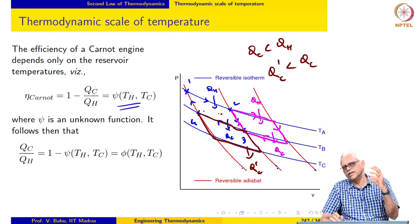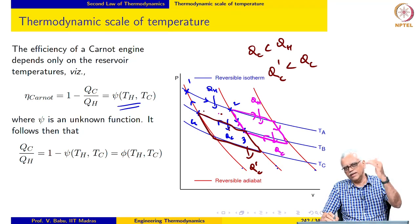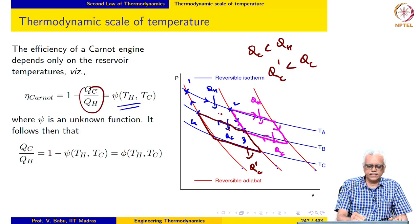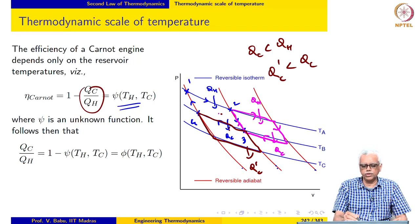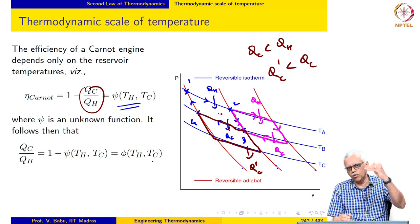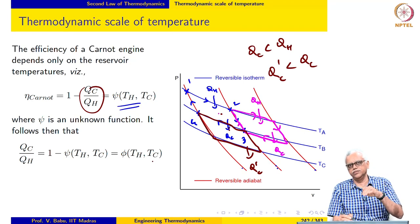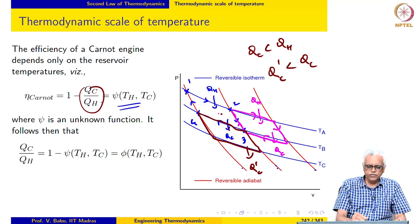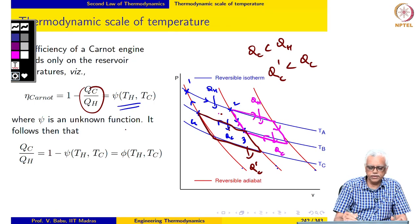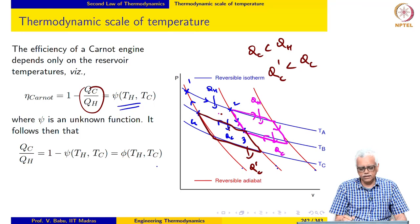If I slide along a reversible isotherm, the cycle remains the same and the heat interaction remains the same — only the state points change. But when I slide down the reversible adiabat from one isotherm to another, the heat interaction changes, which tells me that 1 minus QC over QH is a function only of the reservoir temperature. This makes it clear that the efficiency of the cycle depends only on the reservoir temperatures.